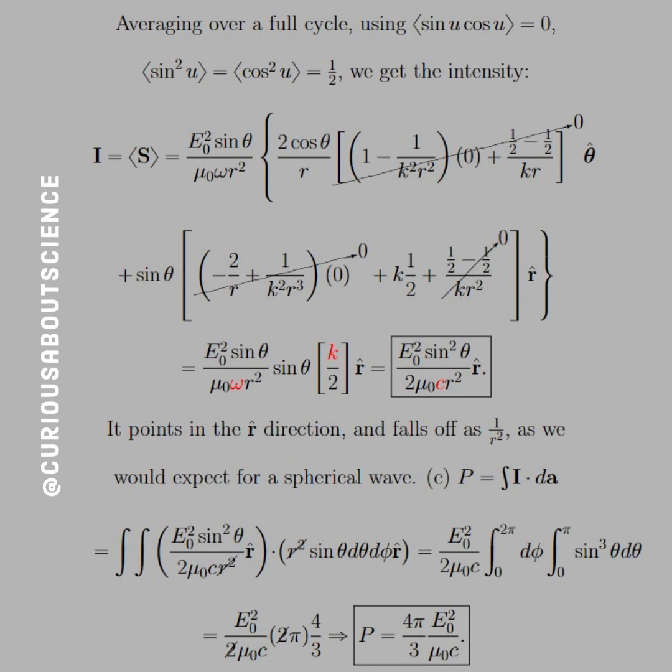And then further, we see that for the r̂, we get that zero from the sin cos again, and then the 1/2, 1/2 in the numerator. So we get a lot of cancellations. Wonderful, wonderful, wonderful. Love it.